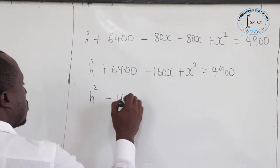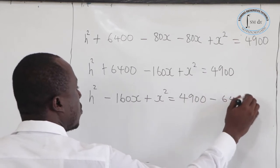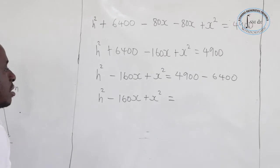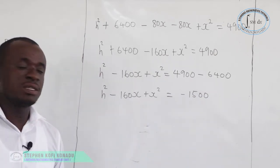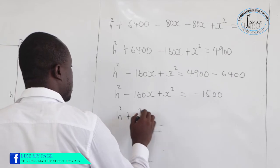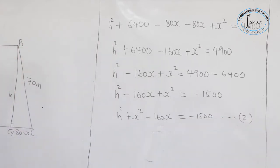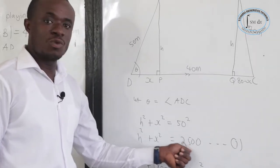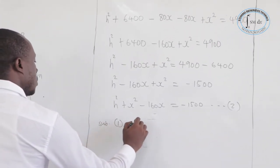So H squared minus 160X plus X squared equals negative 1,500. Let's call this equation 2. From equation 1, we know that H squared plus X squared equals 2,500. We can substitute equation 1 into equation 2.